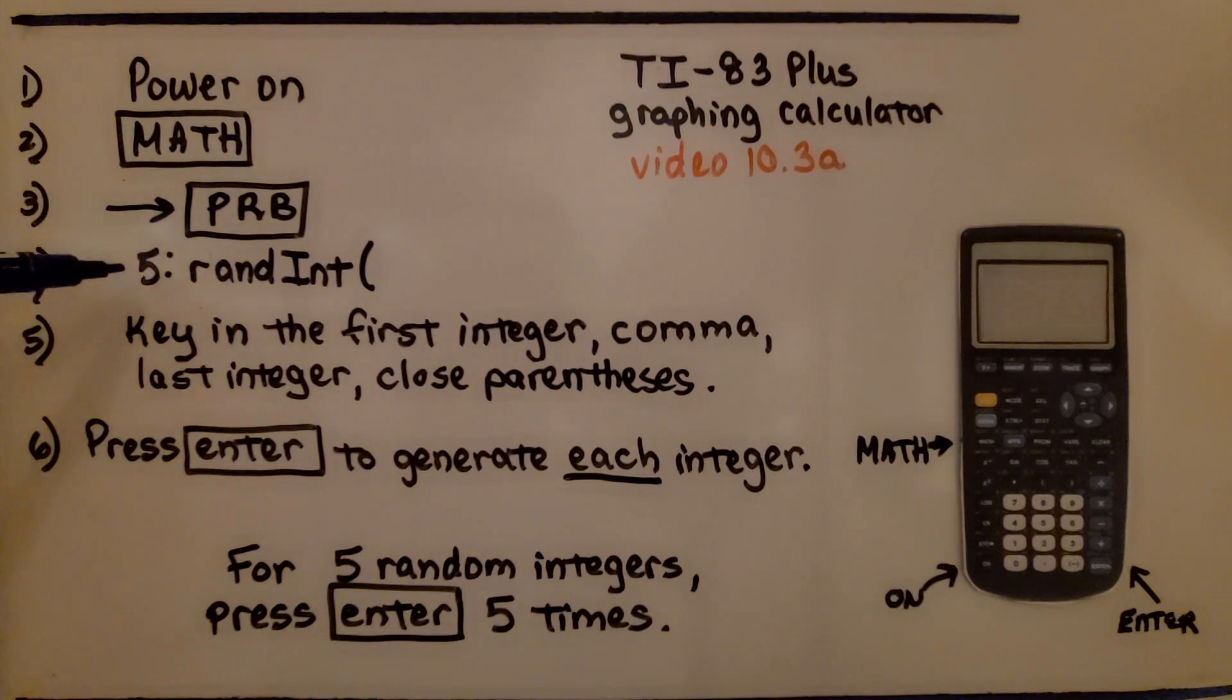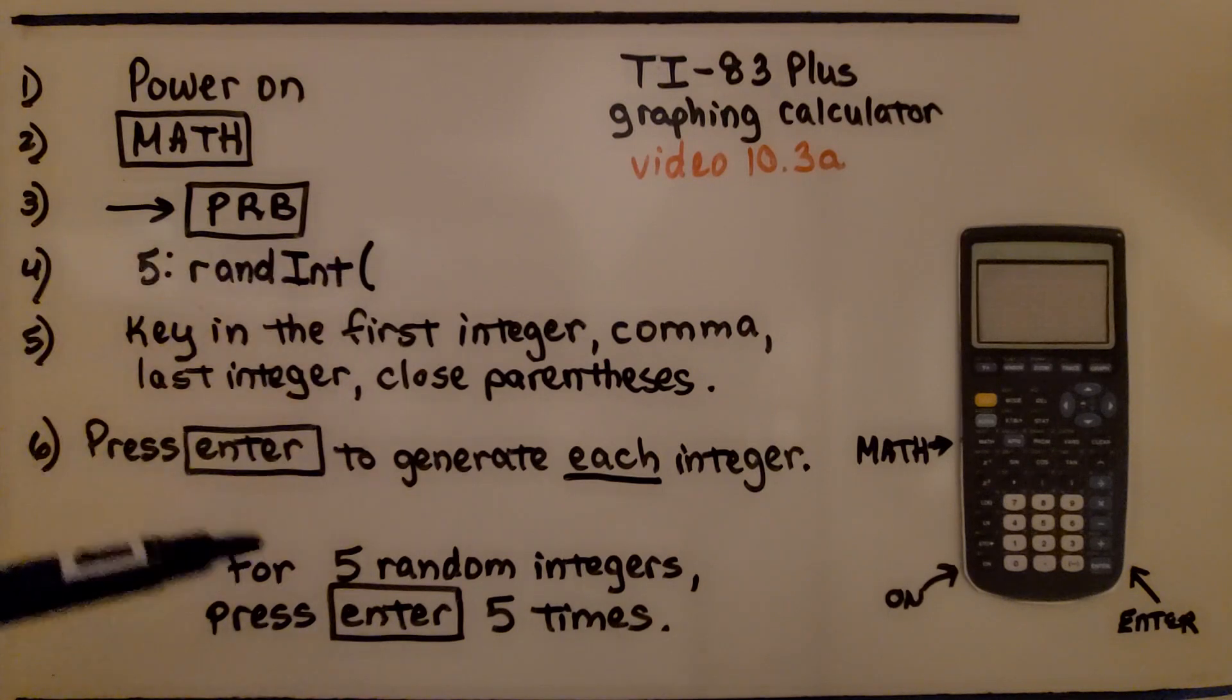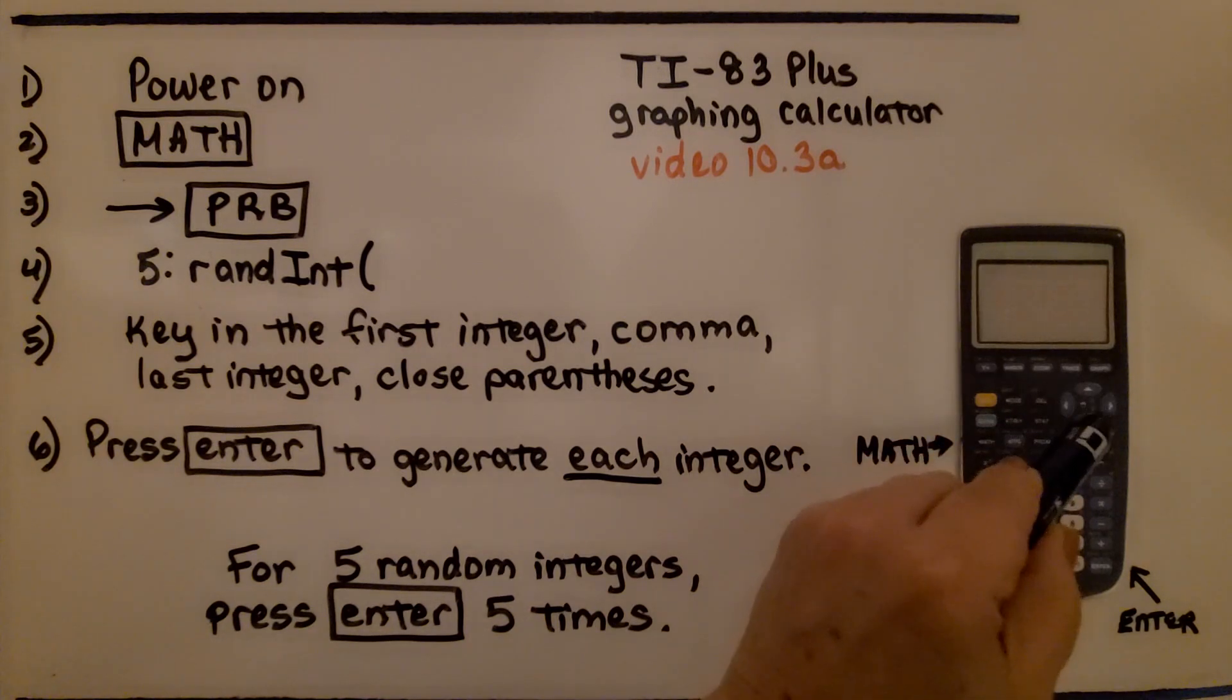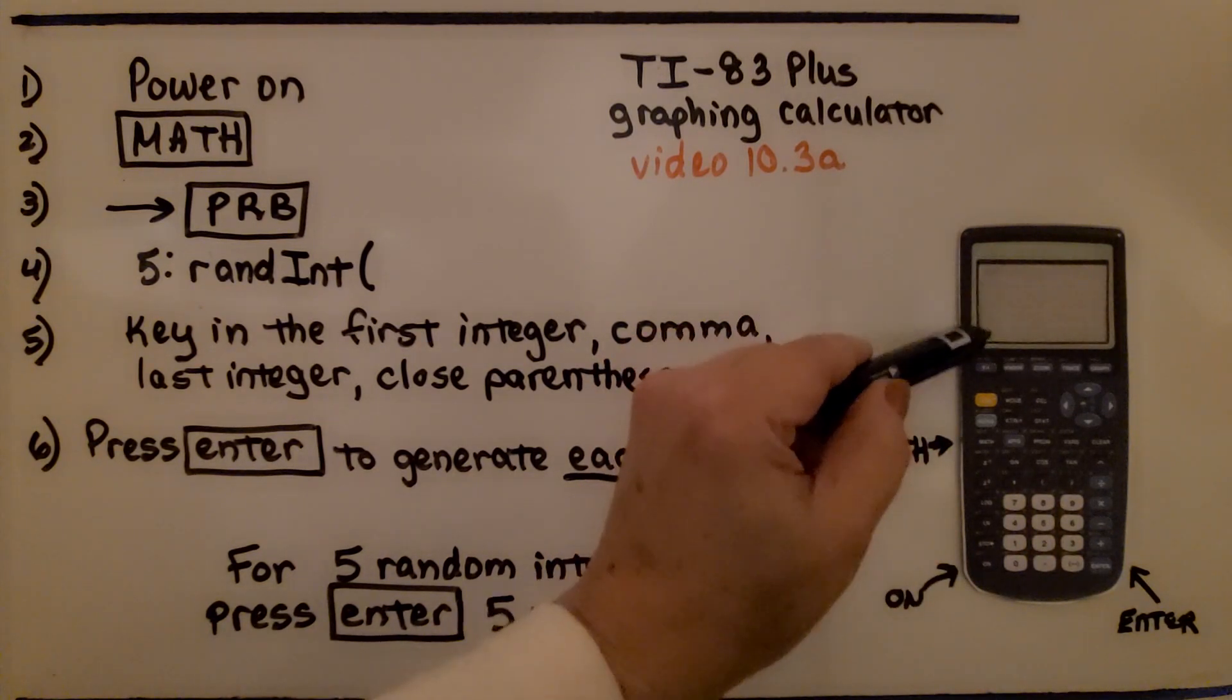Once there, we hit option 5, which is randInt, open parentheses. We can also hit the 5 or scroll down to the 5. You'll see 1, 2, 3, 4, 5 options here.